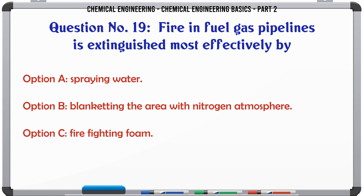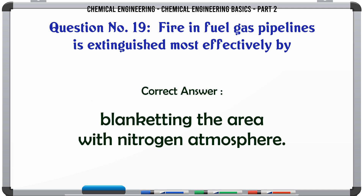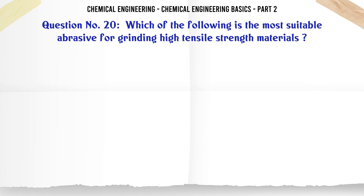Fire in fuel gas pipelines is extinguished most effectively by: a) spraying water, b) blanketing the area with nitrogen atmosphere, c) fire-fighting foam, d) none of these. The correct answer is: blanketing the area with nitrogen atmosphere.